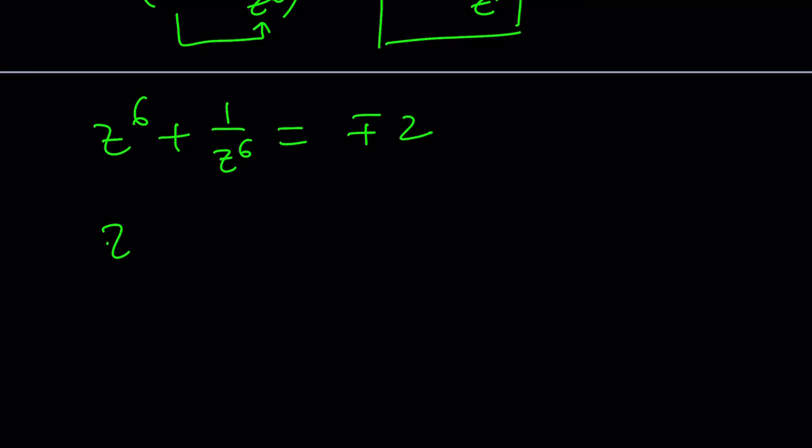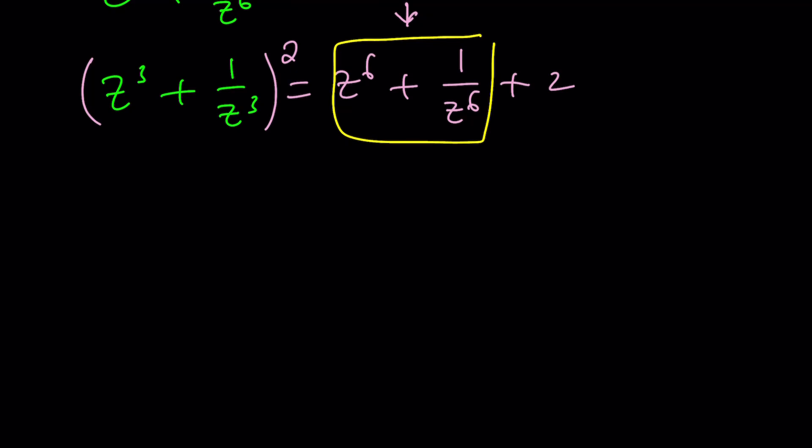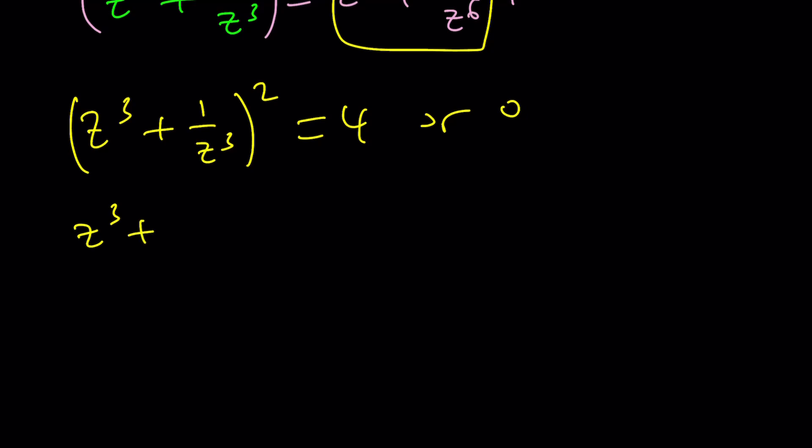Now reverse engineer one more time. Consider now this expression squared. If you square this you're going to get z to the 6 plus 1 over z to the 6 plus 2 again. And now we do know that z to the 6 plus 1 over z to the 6 is plus minus 2. So we have two possibilities. And if you consider both then we're going to get two values for z cubed plus 1 over z cubed squared. It can be 4 or 0. From here we get three values for z cubed plus 1 over z cubed. It can be plus minus 2 or 0.